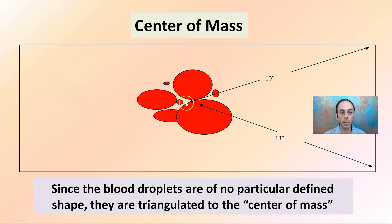This is our blood splatter. We're kind of estimating the center to be right there. And that's what we're triangulating from. Not any one particular droplet, but from the center of that mass there.